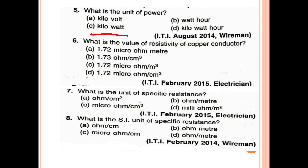Sixth question from the wireman exam: What is the value of resistivity of copper conductor? The value is 1.72 micro ohm per centimeter cube. That is the answer.